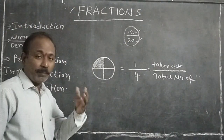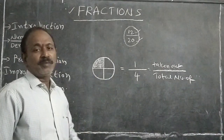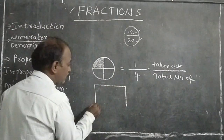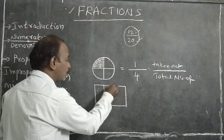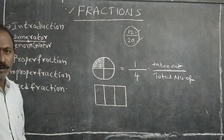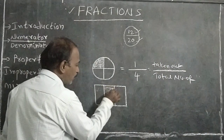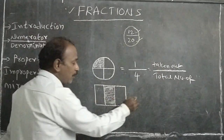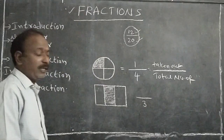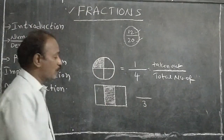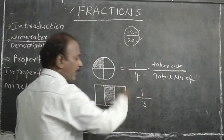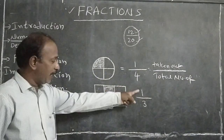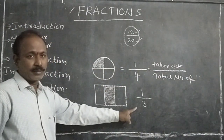A fraction is a part of whole or part of a group. Here there are three equal parts. Among these three equal parts, what fraction is represented by the shaded region? How many equal parts are there? Three equal parts. Out of these three equal parts, one is shaded. So the fraction is 1 by 3 — number of equal parts shaded by total number of equal parts.